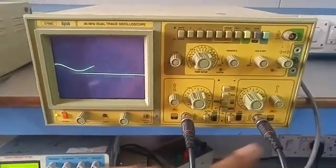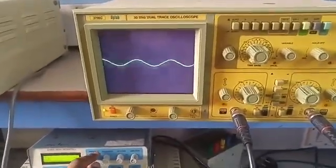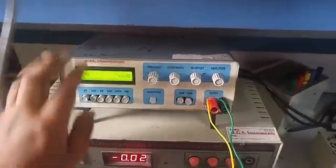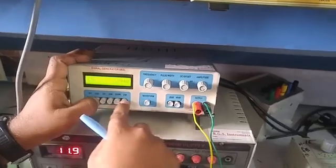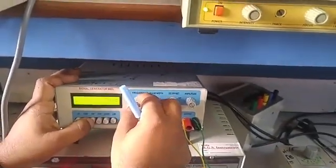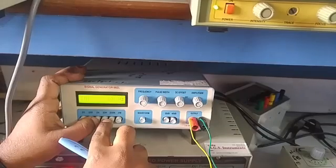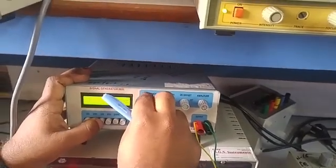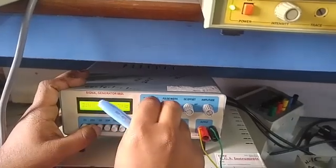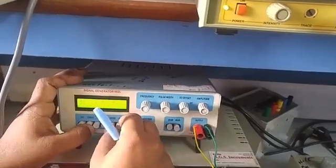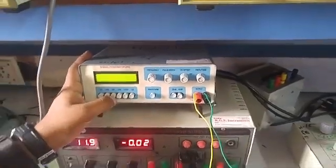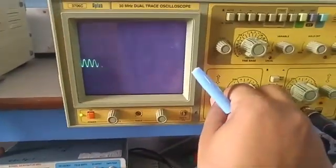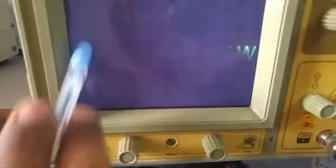This is the input. First for setting input, that is 1kHz. We have set the signal generator to 1kHz. Now you can see that this is 1 volt peak to peak. We have set the input to 1 volt peak to peak.